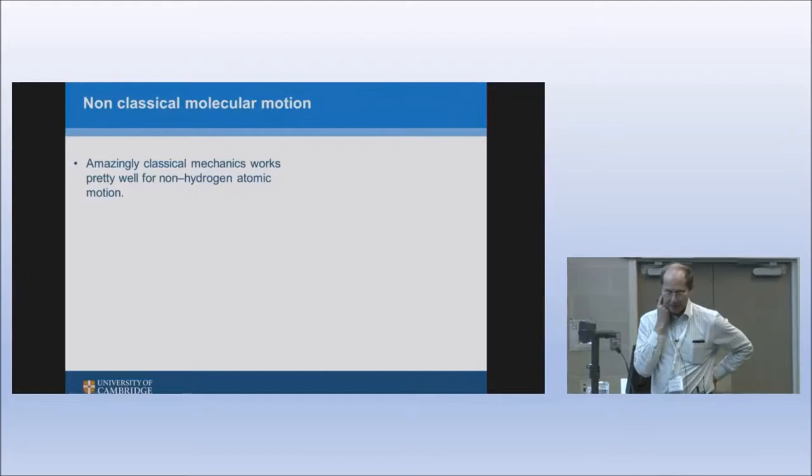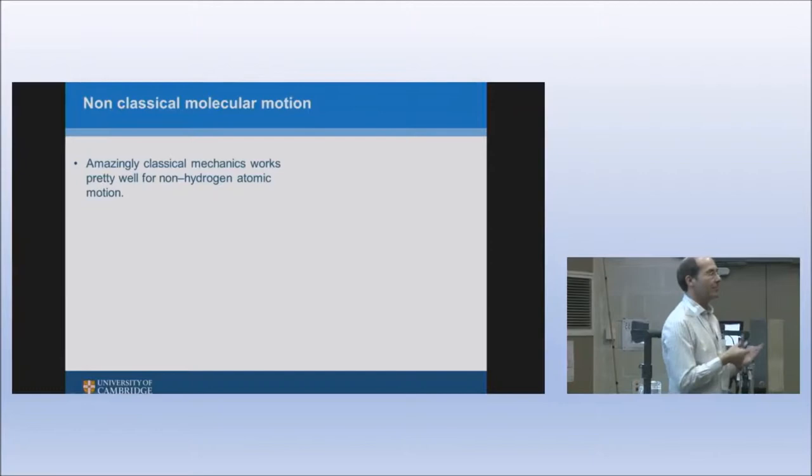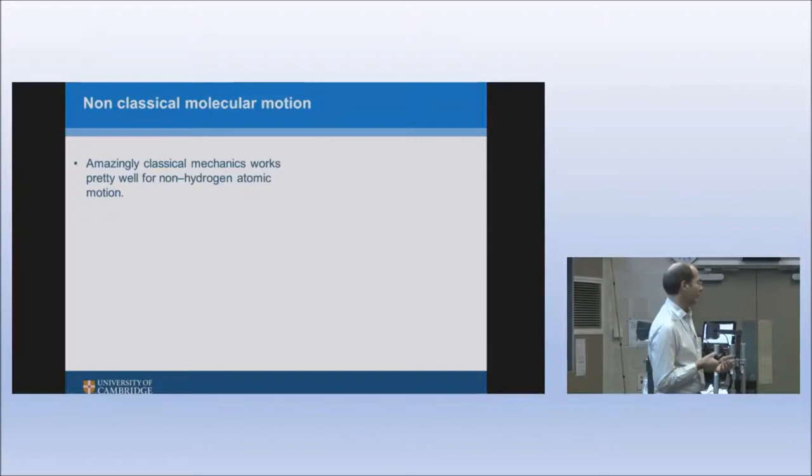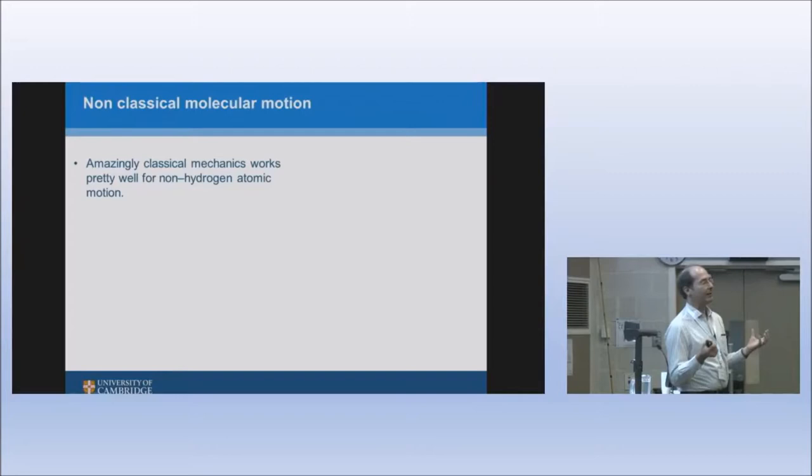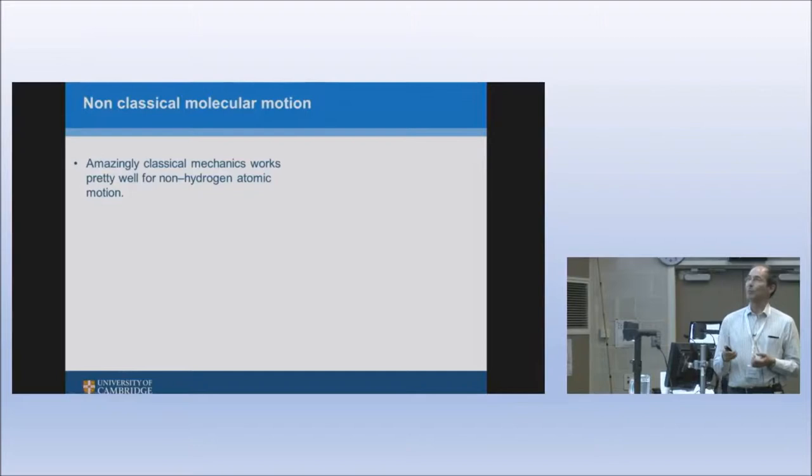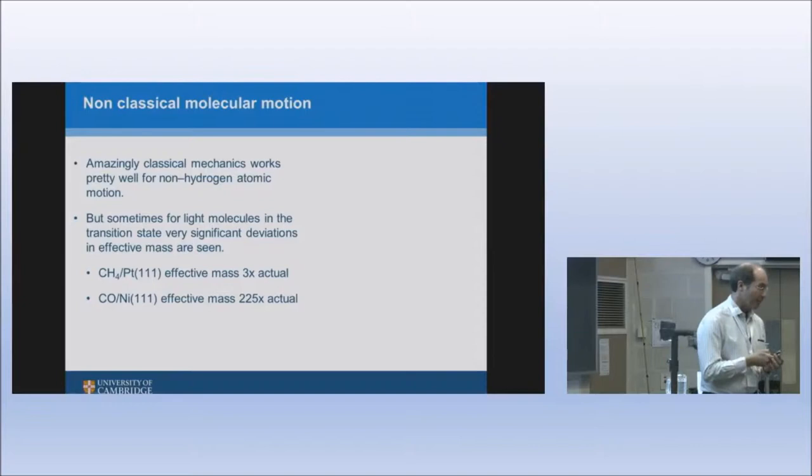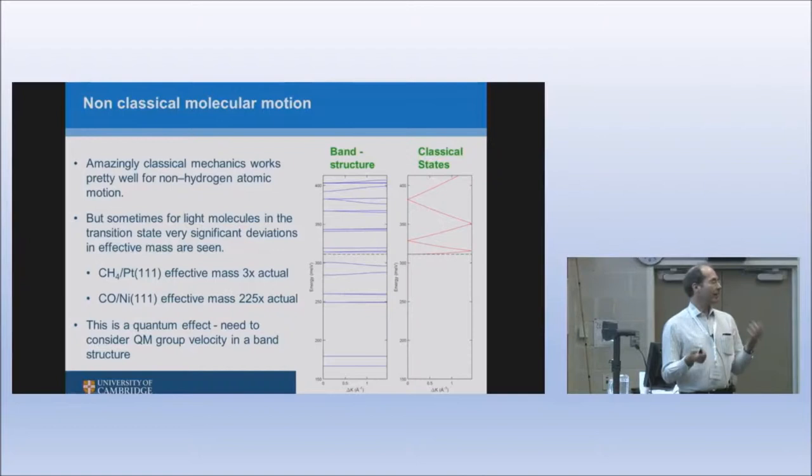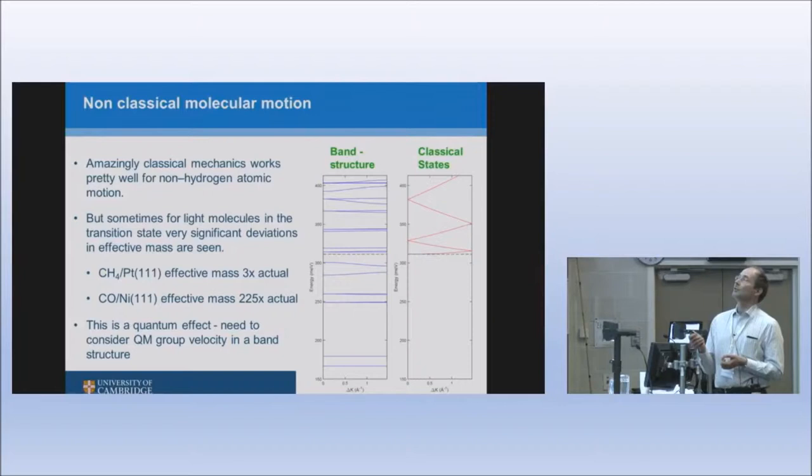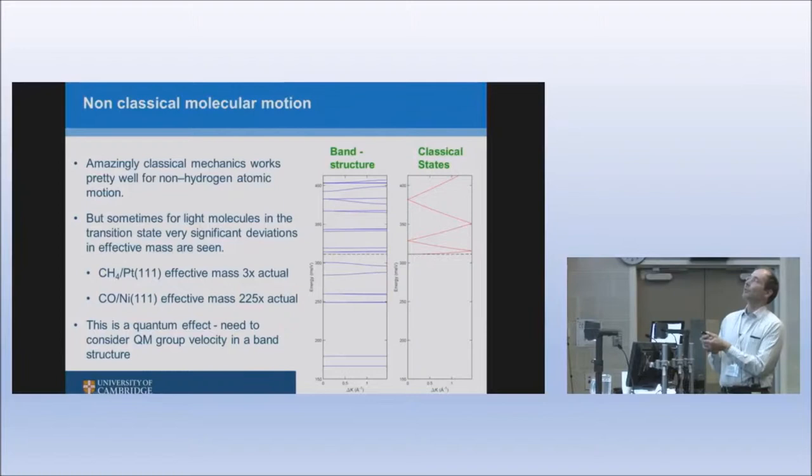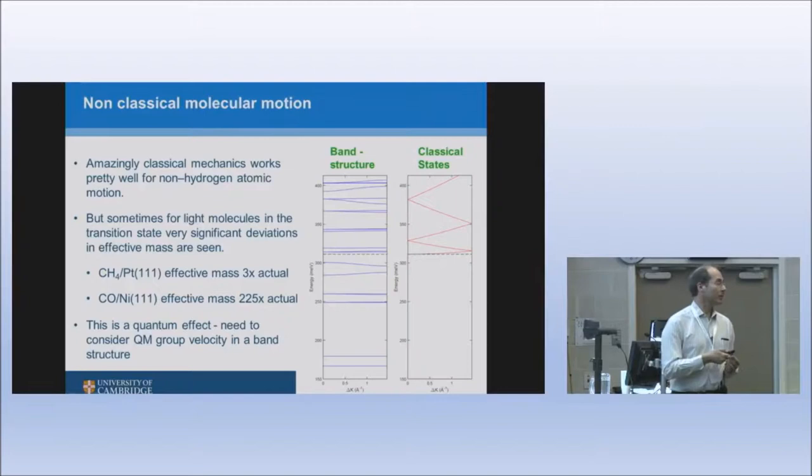Let's look at how this matches up with reality. The first result you get is it's stunning how good classical mechanics is at describing atomic motion. We measure lots of things and by and large, you can use classical mechanics to describe it, which is stunning because the wavelengths of these things is about half an angstrom. This is good news because there are millions of people who do molecular dynamics and assume this is the case. Sometimes, if you look at light molecules like methane and carbon oxide in this transition state when they're moving at fair speed, you see a large quantum effect. They're moving much more slowly than you expect. This is where quantum mechanics has kicked in.